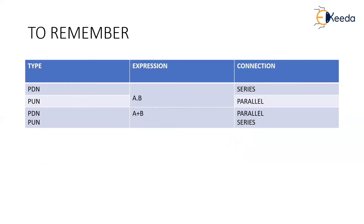And one more thing that we must keep in mind — this is most important. What I have written? Type, expression, connection: PDN, PUN, PDN, PUN. Expression is A·B. It is nothing but an AND gate. My pull-down network or pull-up network will be having various MOSFETs. How the MOSFETs have to be connected? If my expression is OR or if my expression is AND, whether the MOSFETs have to be connected in series or in parallel — this is what is given in this table.